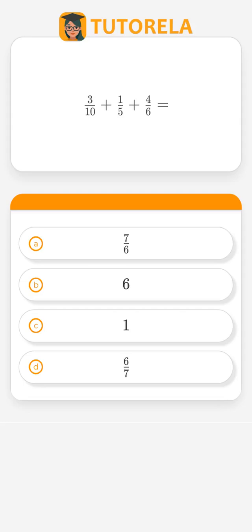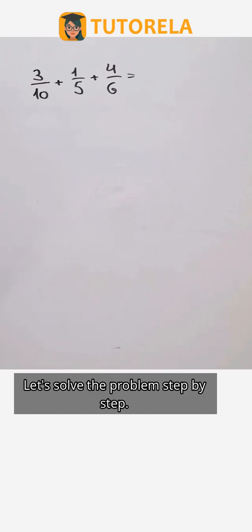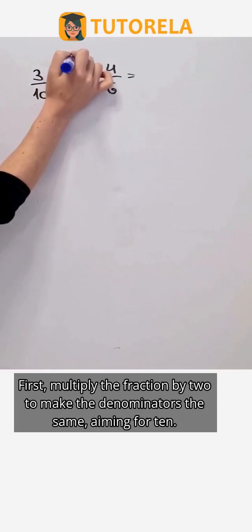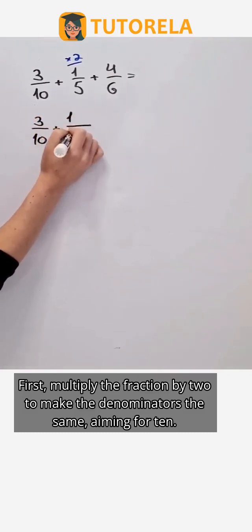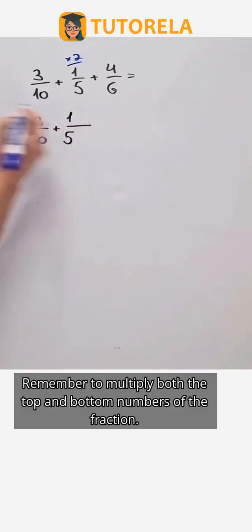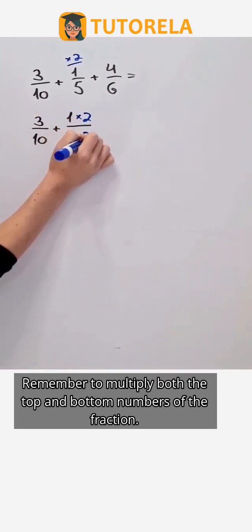3 tenths plus 1 fifth plus 4 sixths equals. Let's solve the problem step by step. First, multiply the fraction by 2 to make the denominators the same, aiming for 10. Remember to multiply both the top and bottom numbers of the fraction.